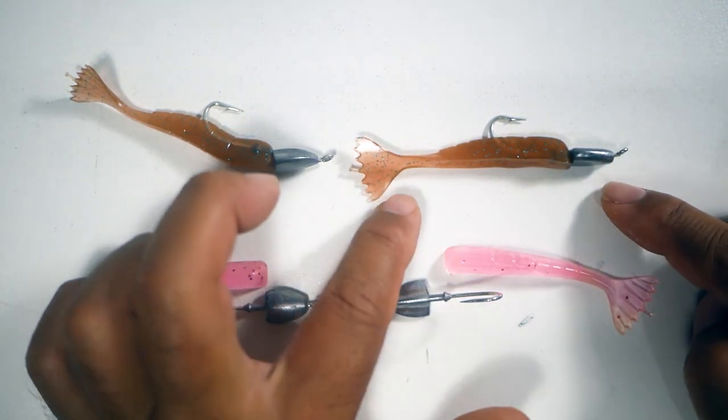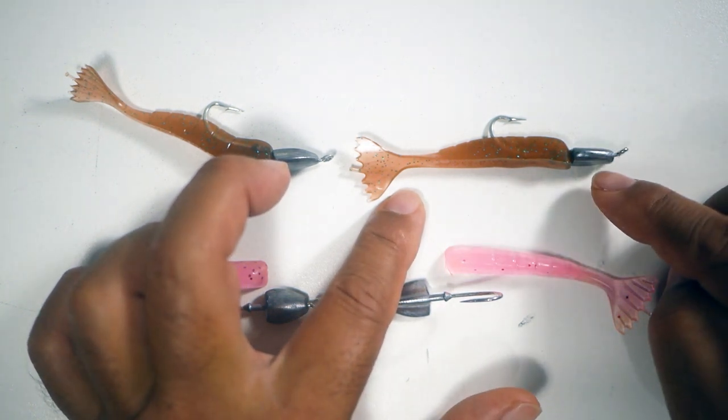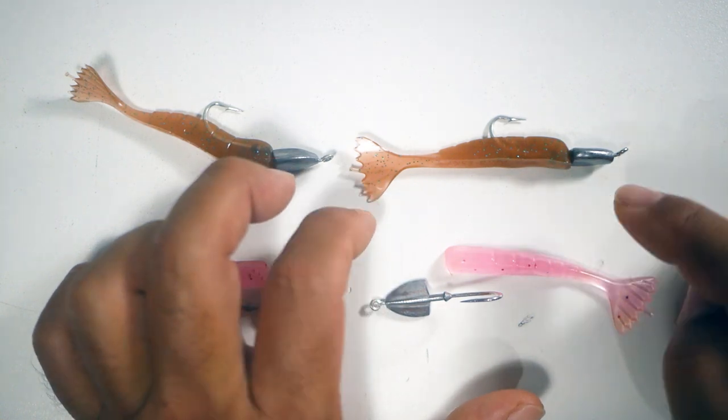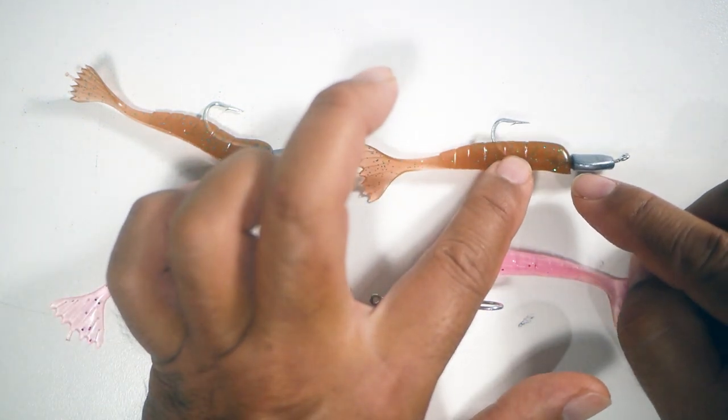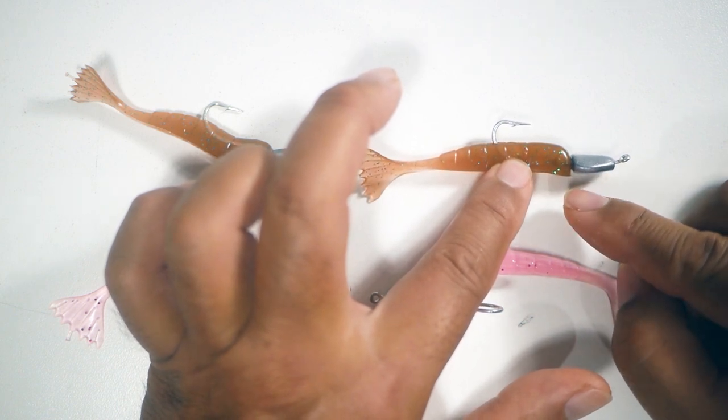For example, on the straight version of the bonefish jig head, you want to align the bottom of the jig head with the bottom of the shrimp. You're going to do that by making an insertion point roughly about a third to a quarter from the bottom.